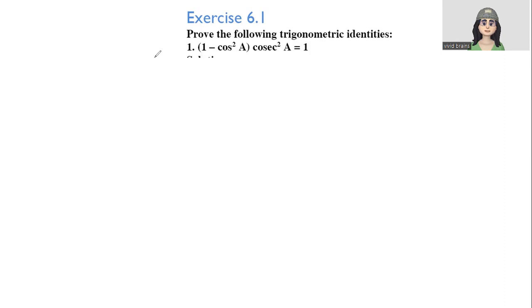Let us consider here LHS. So here LHS is 1 minus cos²A into cosec²A. So this is LHS. Now we have to get RHS as 1.